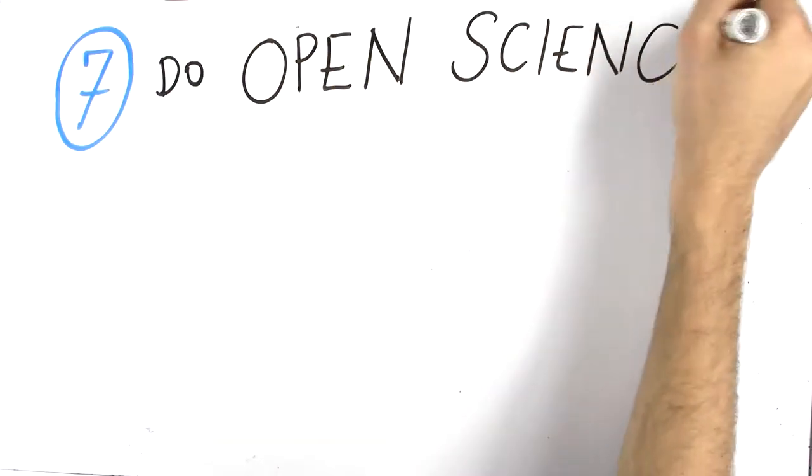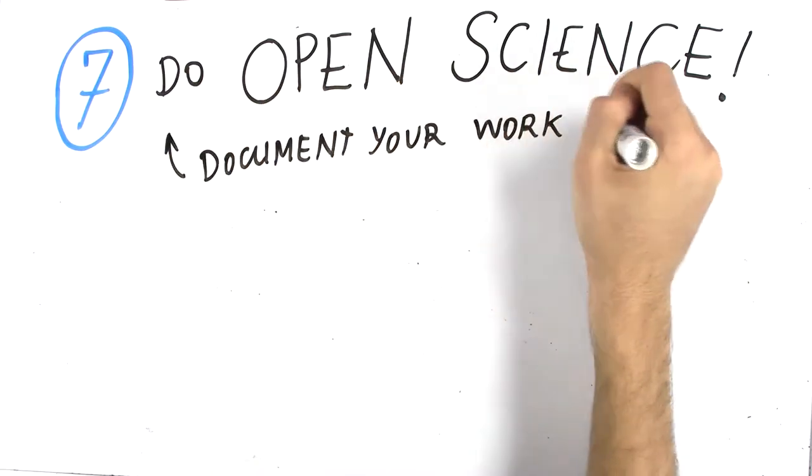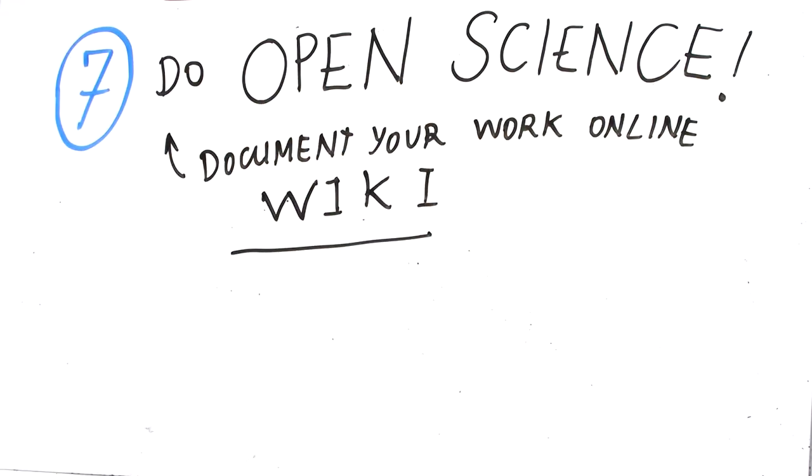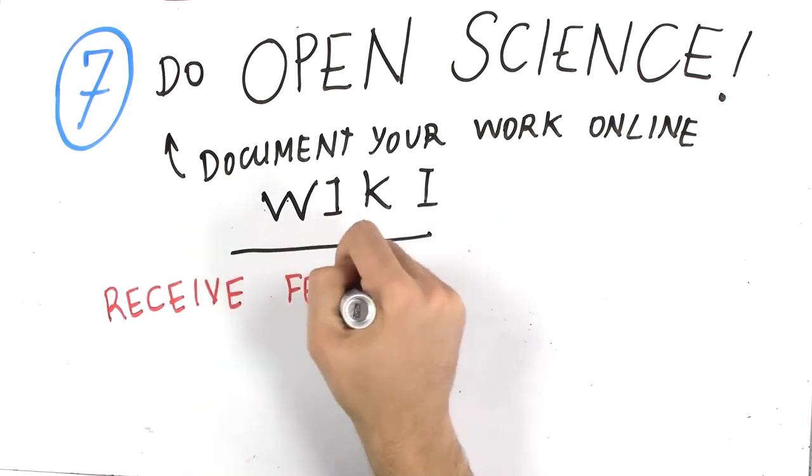Seven, open science is one of the main pillars of iGEM. Document your work online, for example on a wiki, so that people can easily access and follow your project and give you feedback and advice.